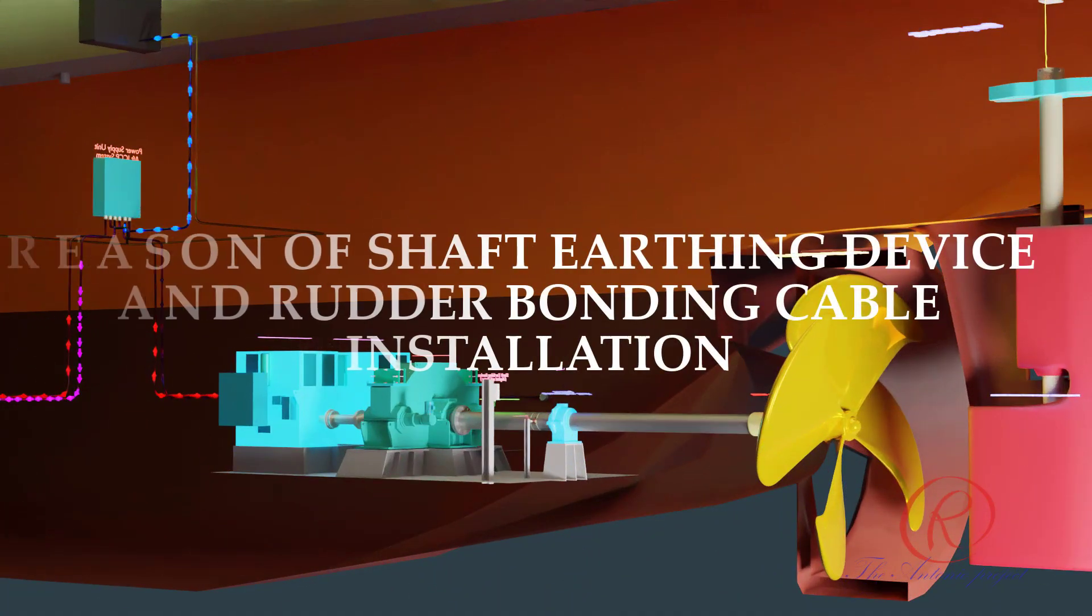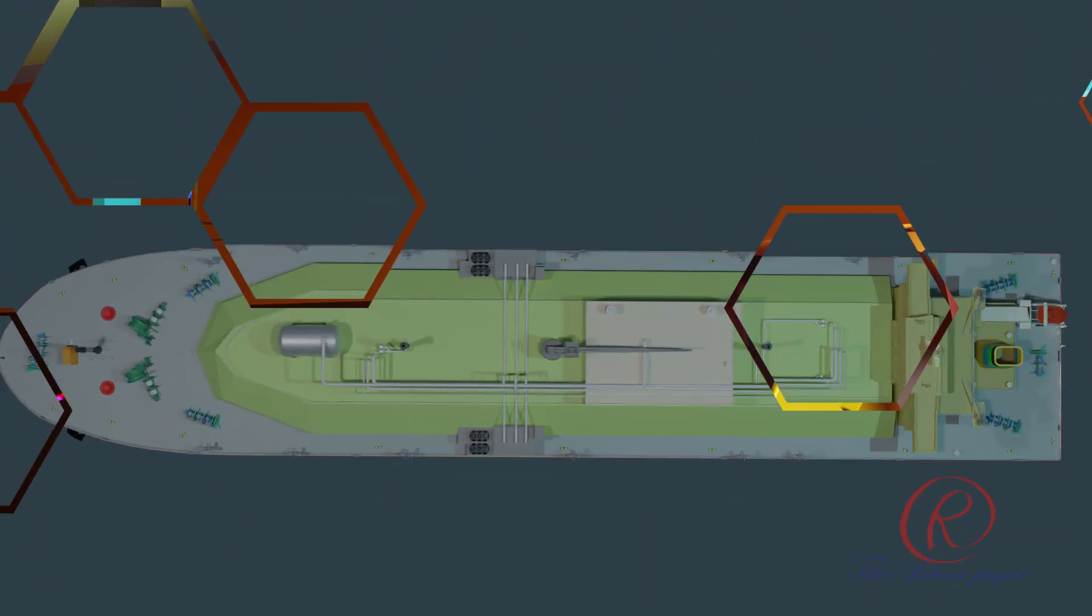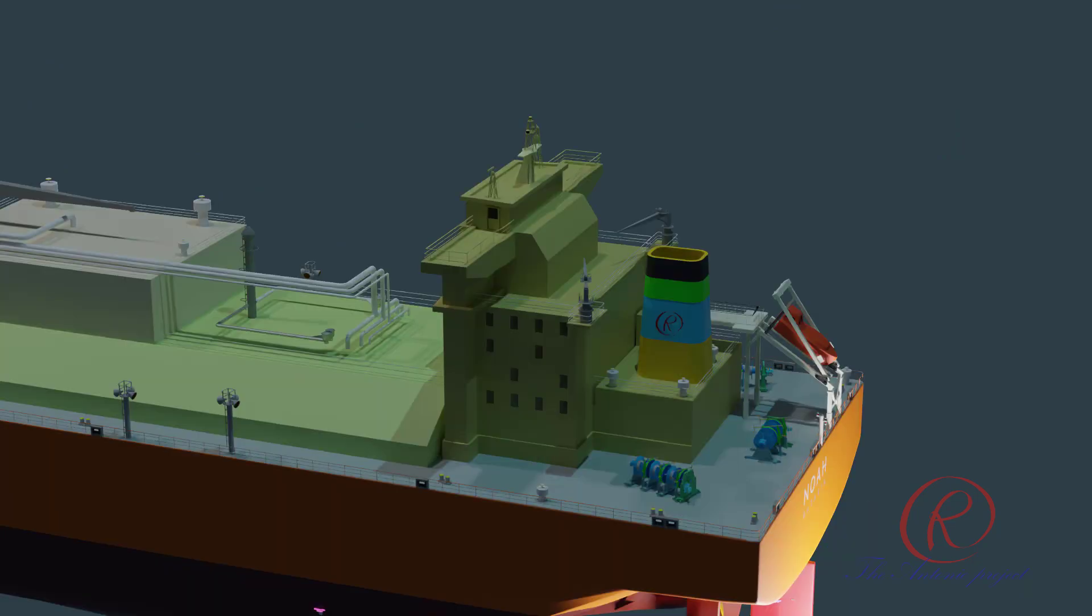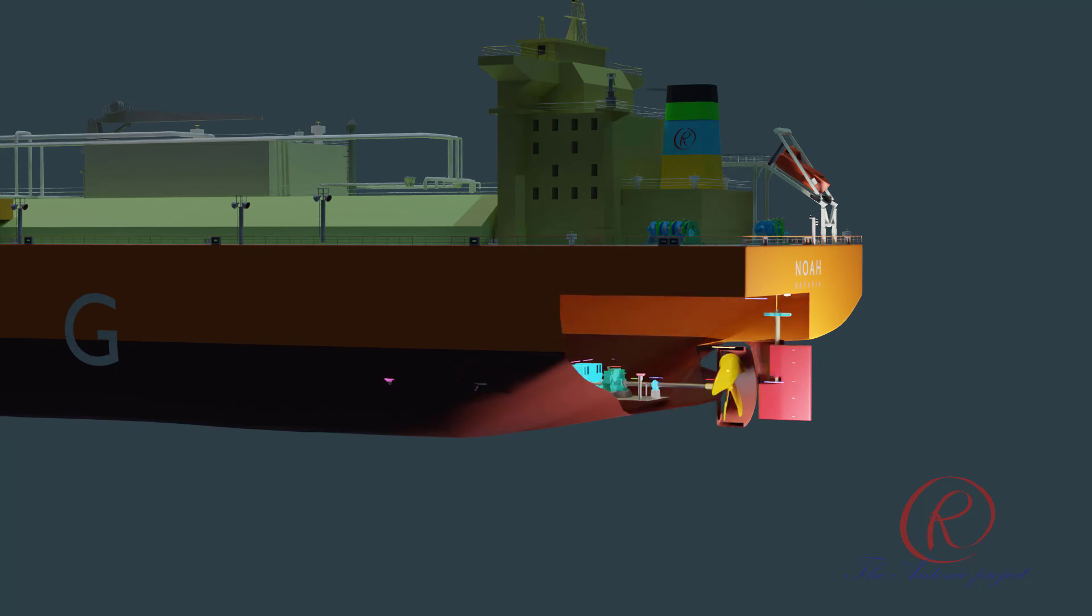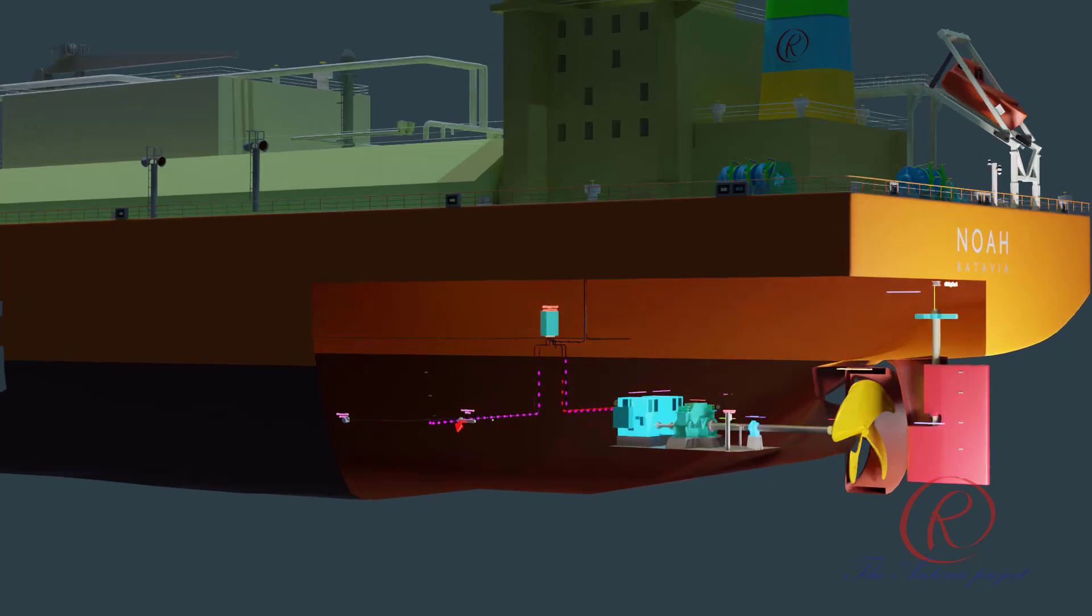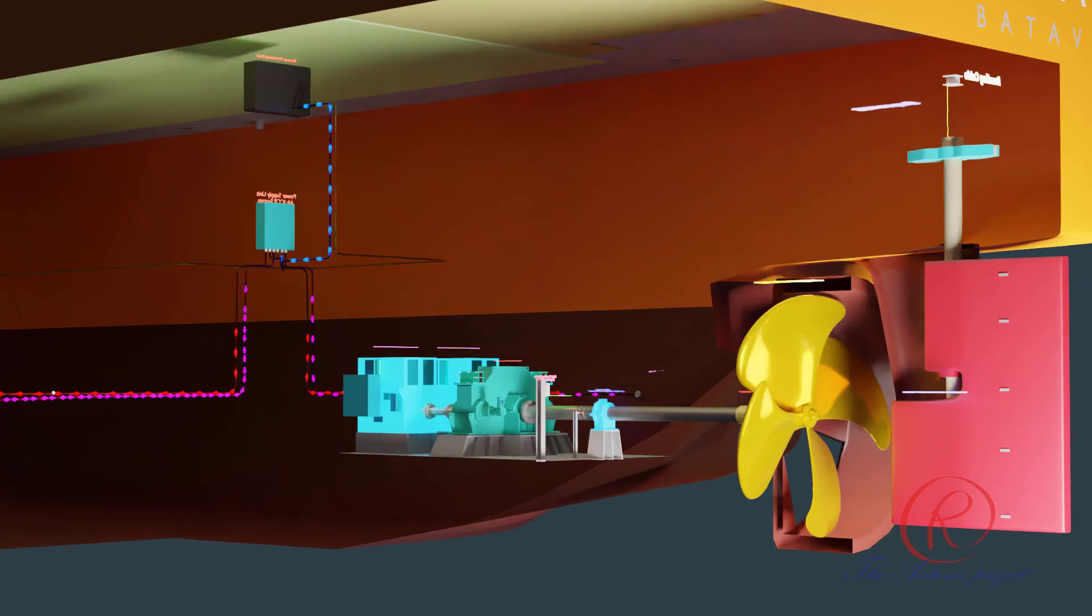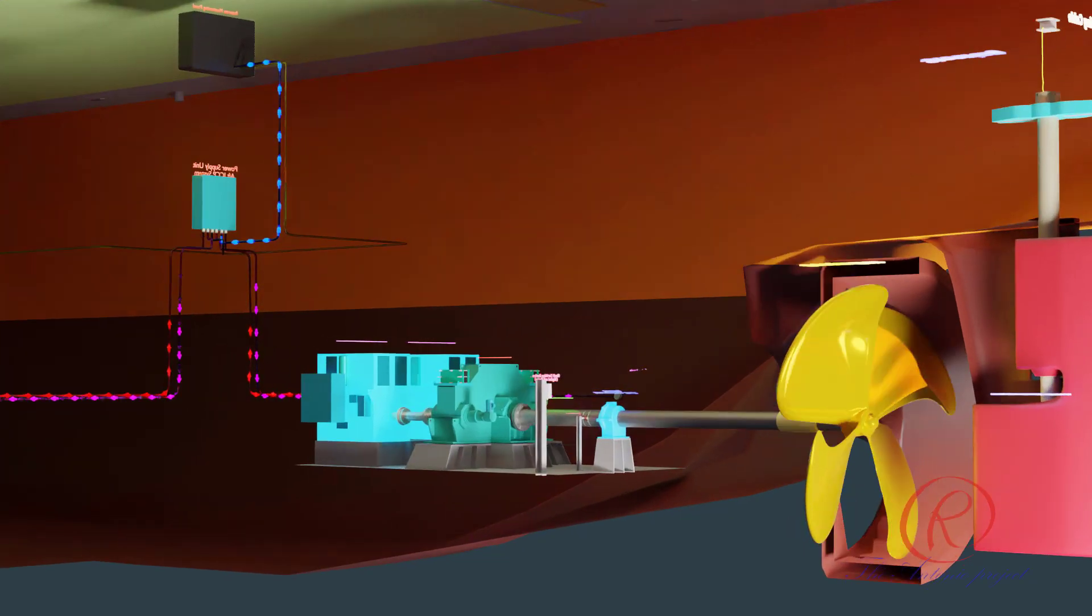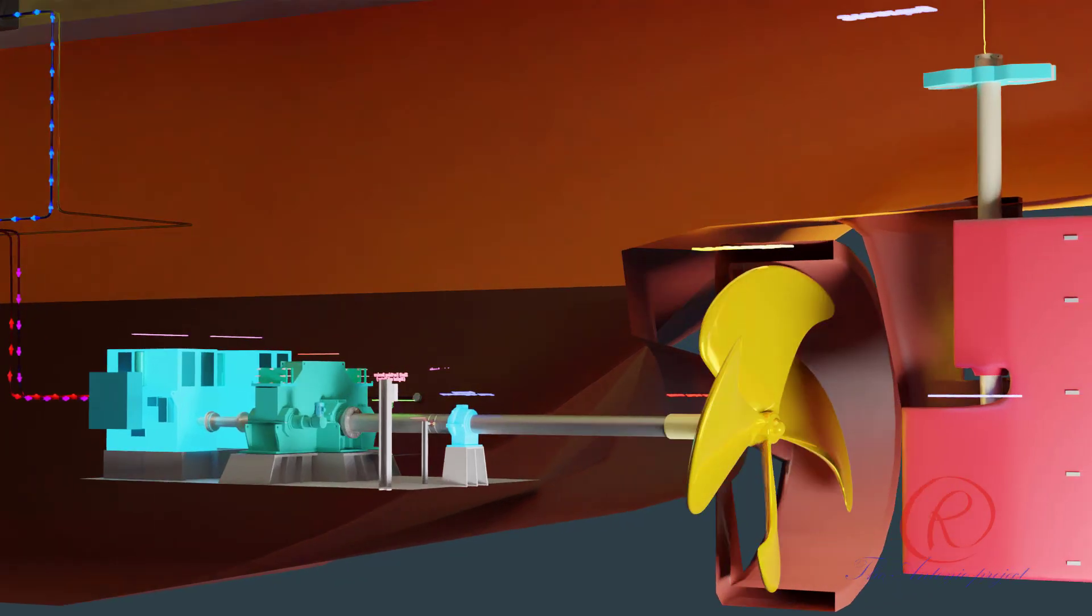Reason of shaft earthing device and rudder bonding cable installation. A turning propeller and rudder are electrically insulated from the hull by the lubricating oil film in the bearings and by the use of non-metallic bearing materials in the tail shaft and rudder carrier. When the shaft and rudder are insulated in this way, an electrical potential can be measured between the shaft and the hull, and this can accelerate corrosion in the ship.